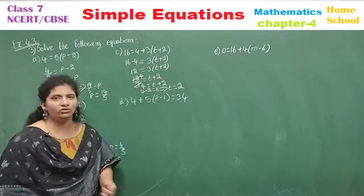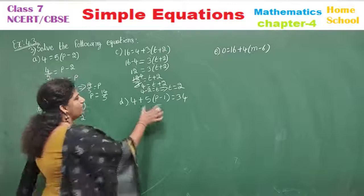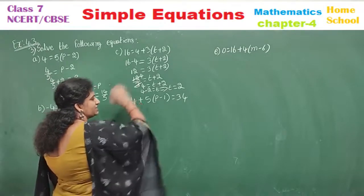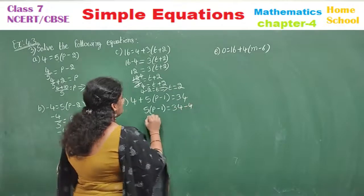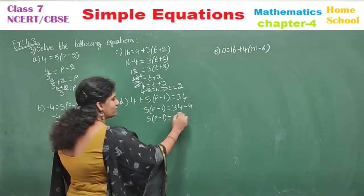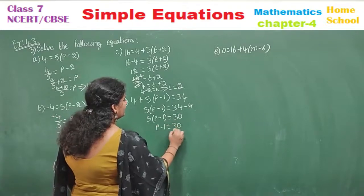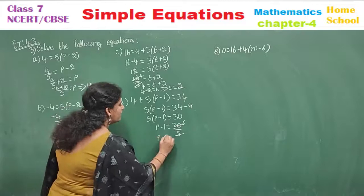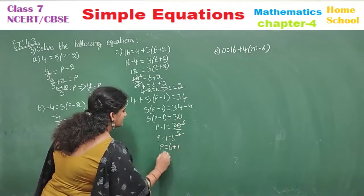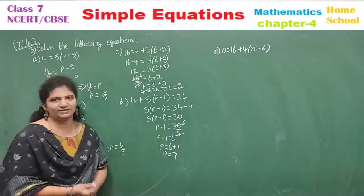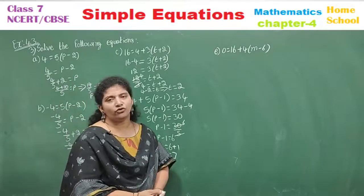Next sub-question (d): 4 plus 5 into (p minus 1) is equal to 34. The extra number 4 is not with the variable — transpose it to the other side as minus 4. So 5 into (p minus 1) equals 30. The multiple 5 goes other side as divisor: 30 by 5 is 6. So p minus 1 equals 6. Transpose minus 1 to get plus 1: p equals 7.